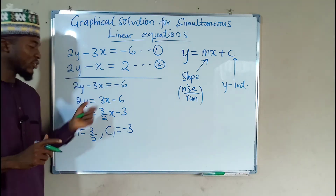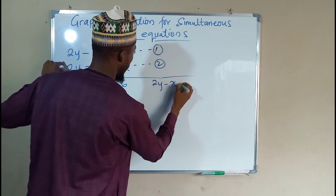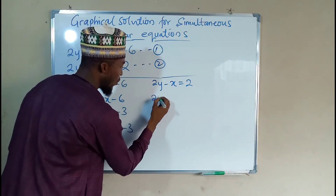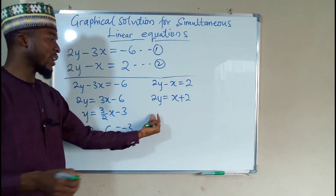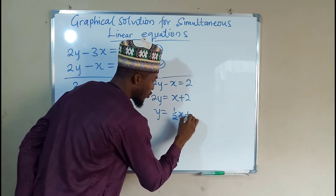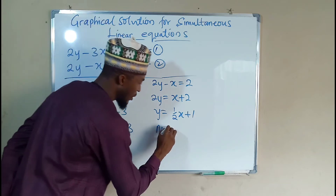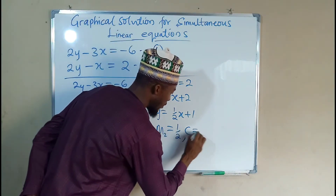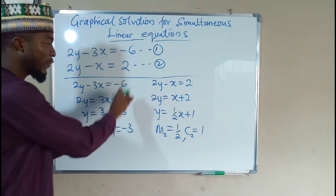Now let us transform the other equation into this form. The second equation is 2y minus x equals 2. If you take x to the right-hand side, it becomes positive, so we have 2y equals x plus 2. Dividing both sides by 2, we get y equals 1 over 2 times x plus 1. Hence, m2 equals 1 over 2, and c2, the y-intercept of the second equation, is positive 1. So the y-intercept and the slope are enough for us to construct the graph of each equation.